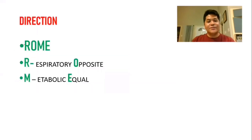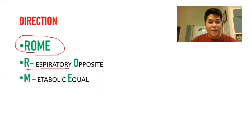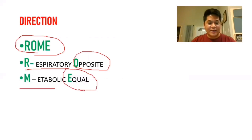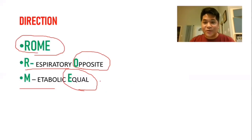To determine whether it's acidosis or alkalosis, remember ROME: R stands for Respiratory — Opposite direction. M stands for Metabolic — Equal direction, meaning they move in the same direction.